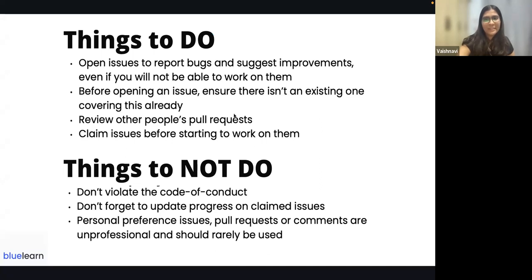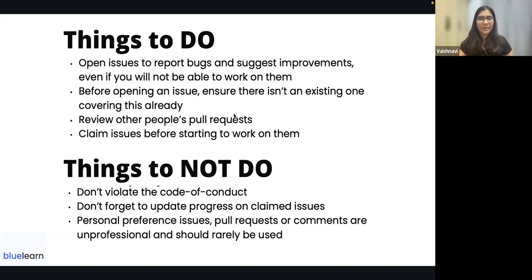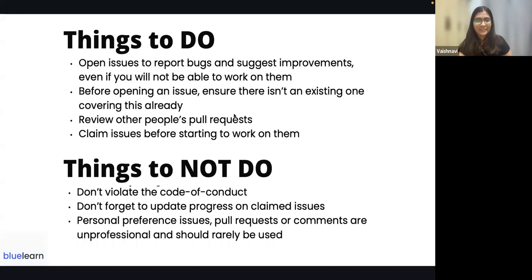A pull request is when you see a change needed in a project you don't own. You clone the project locally, make the change, push it to your local fork, and then create a pull request on the main project to get the attention of the main contributors so they can review it and suggest changes.